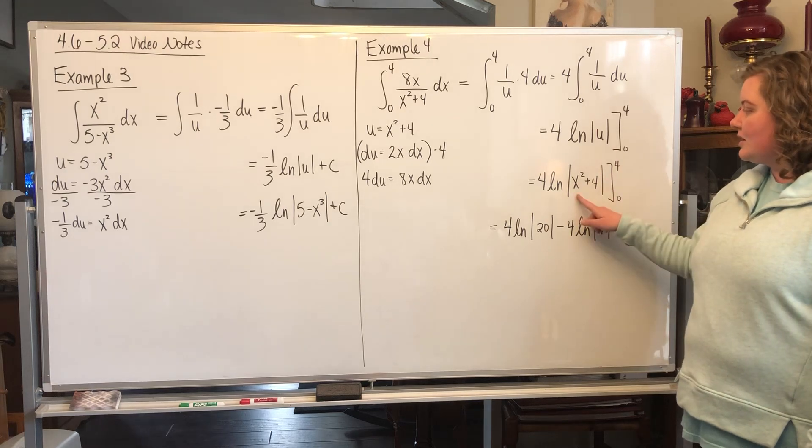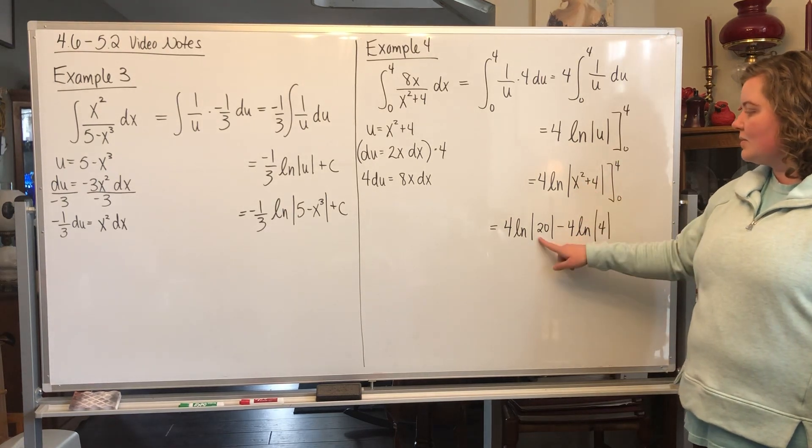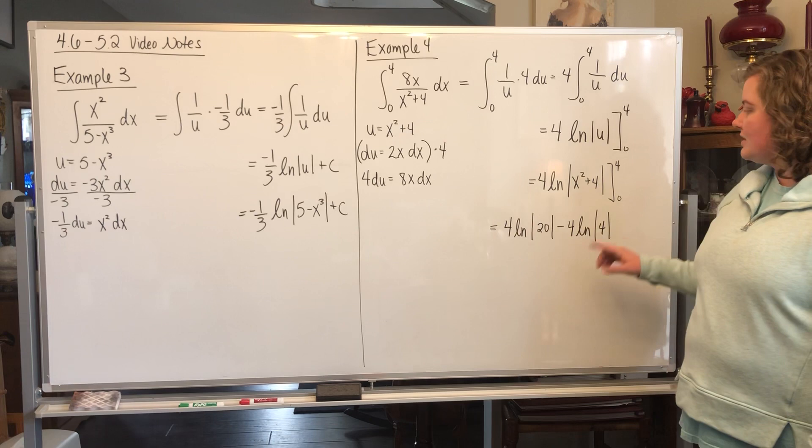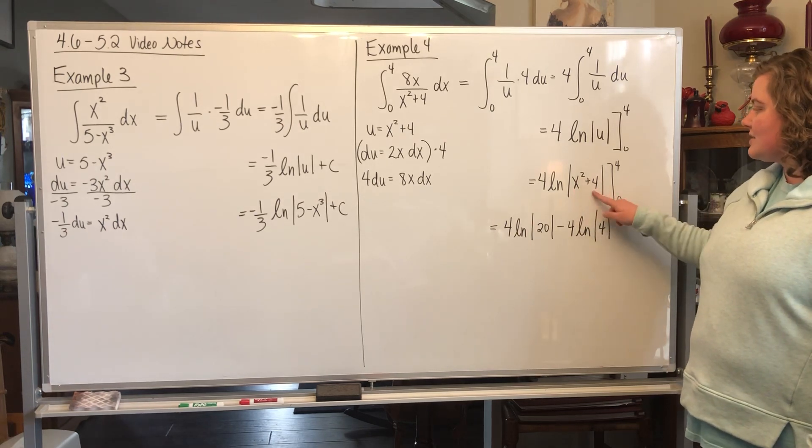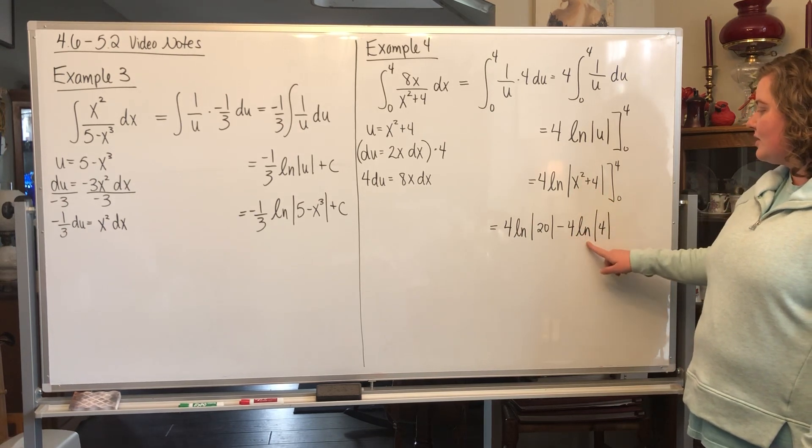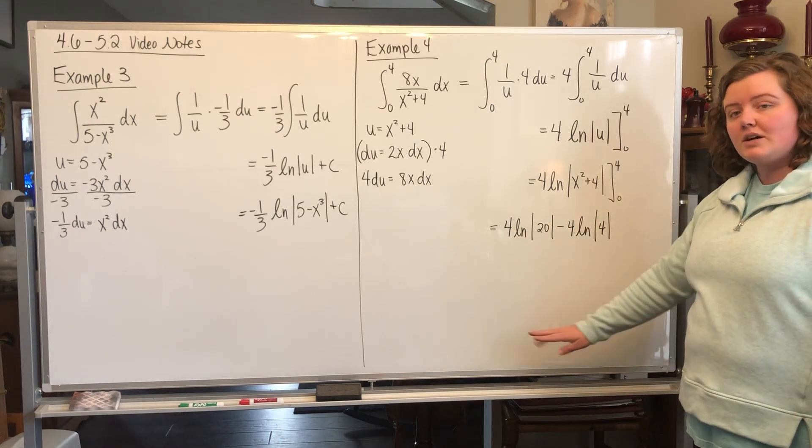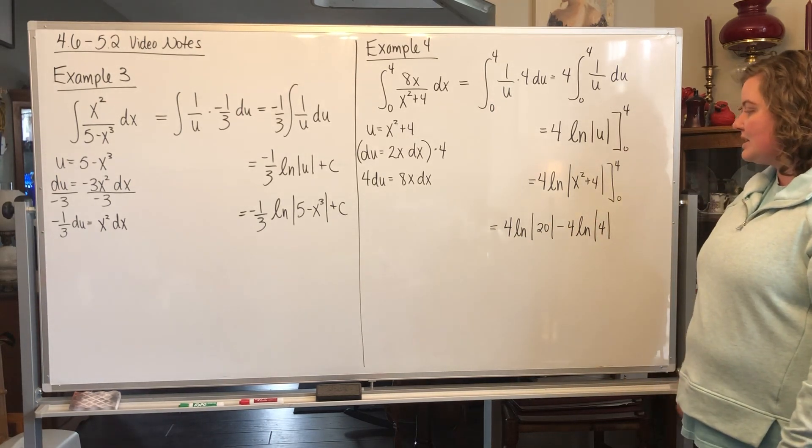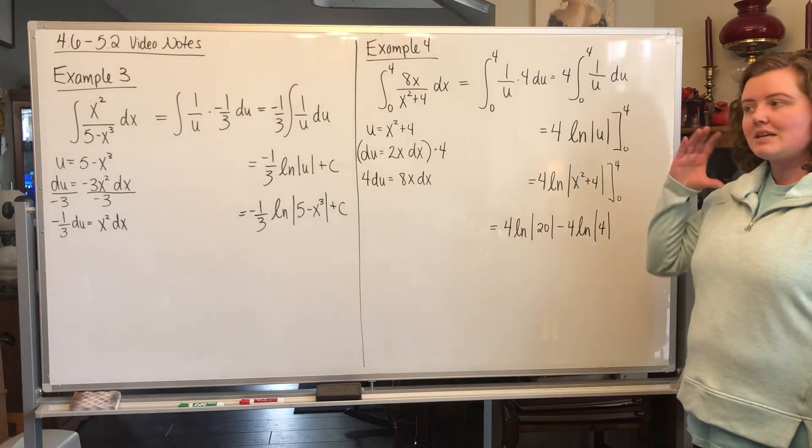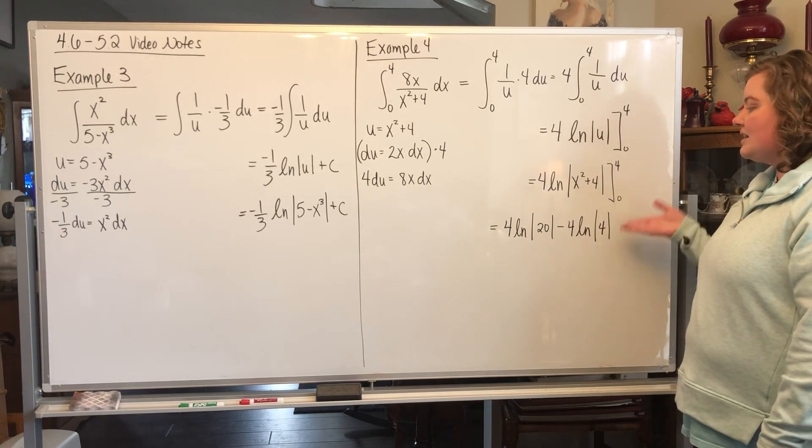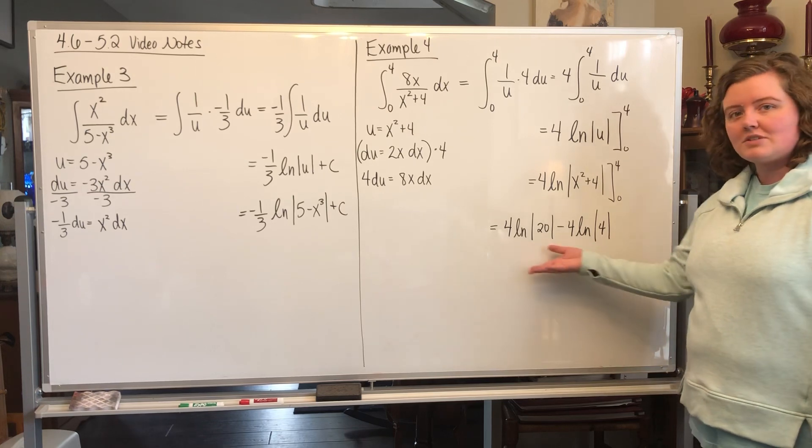If you plug in 4, you get 4 squared plus 4, which gives you 20. That's the first part. If you plug in 0, you still have this 4 left over, so you have 4 natural log of 4. You can rearrange this more if you want to and use natural log properties—like subtracting logs is the same thing as dividing. But if it was a free response, it's all numbers now.